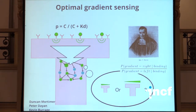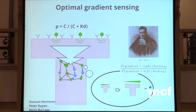We hypothesize that the growth cone may be implementing the approach of Reverend Thomas Bayes — in particular, the optimal way to detect a gradient, which is simply to compare the probability of the gradient pointing right given the pattern of binding, with the probability of the gradient pointing left given the pattern of binding. Using Bayes' theorem, we can calculate the probability of the binding given that the gradient points right or left, which are easy to calculate based on receptor binding kinetics. We can then invert that to calculate the optimal decision. So we're taking an ideal observer approach here.